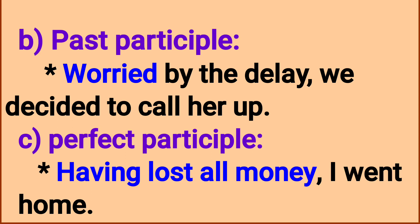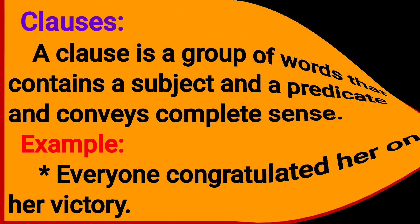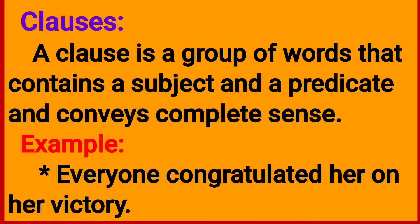'Worried by the delay, he called and decided.' 'Worried' is the past participle. Perfect participle: 'Having lost all money, I went home.' 'Having' introduces the perfect participle phrase.